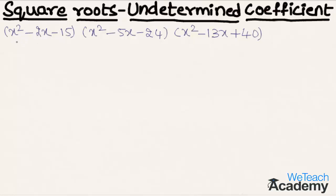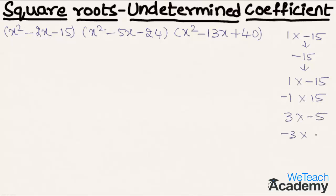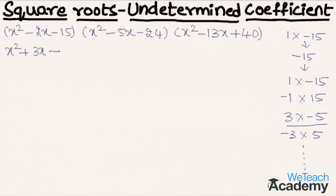Let us factorize the first expression. Multiply the coefficient of x² and the constant term: 1 × (-15) = -15. The factors of -15 include 1×(-15), (-1)×15, 3×(-5), (-3)×5. We need a pair that adds to give the coefficient of x, which is -2. Adding 3 and -5 gives -2. So we can write the expression as x² + 3x - 5x - 15.